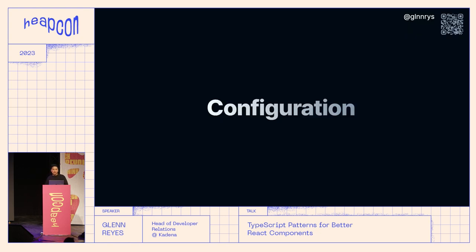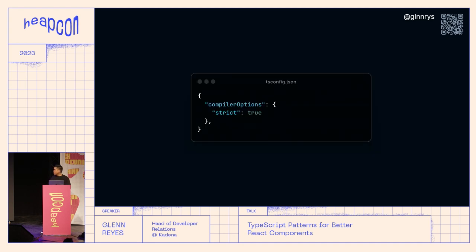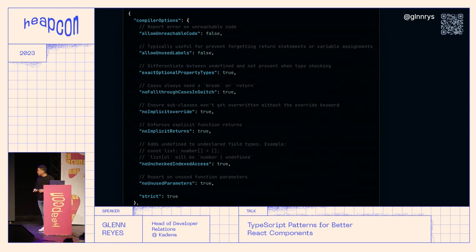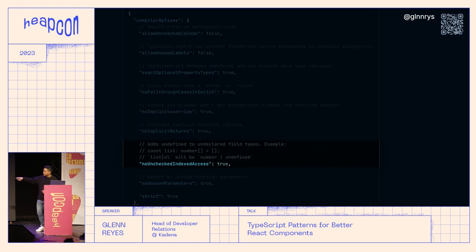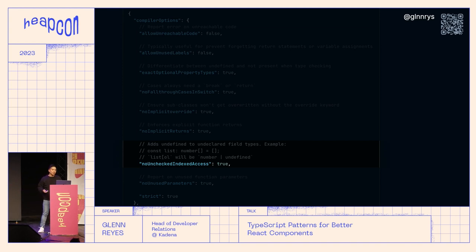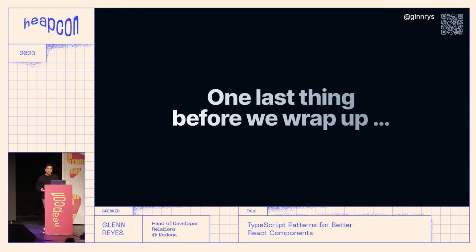The last thing I want to talk about is TypeScript configuration. I'm pretty sure everyone has the strict flag set in their tsconfig, but there are tons of other options not included in that strict flag. I particularly want to mention noUncheckedIndexedAccess — it's so useful because if you try to index into an array, TypeScript normally just types it as the array element type. But accessing by index can actually be undefined, and this flag makes it correctly typed as potentially undefined, which I think is really cool.